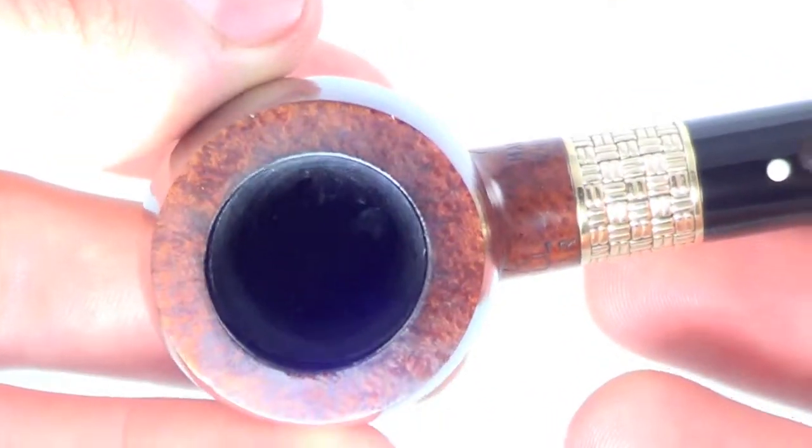The rim is char-free and also has some nice graining on the rim as well. The bowl walls are nice and thick.